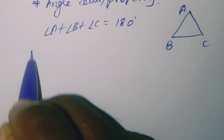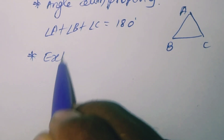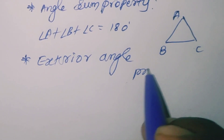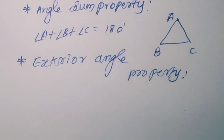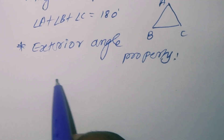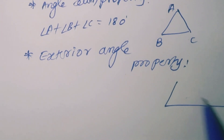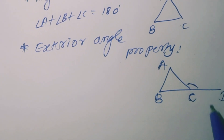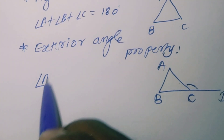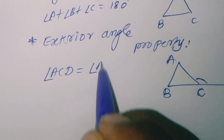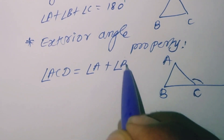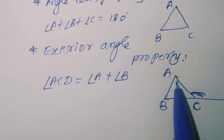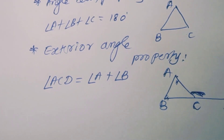Next, the exterior angle property. If you consider a triangle ABC with an exterior point D, then angle ACD is equal to angle A plus angle B. That means the exterior angle of a triangle equals the sum of the two interior opposite angles.